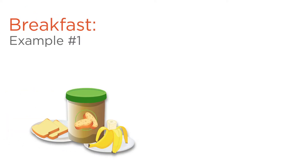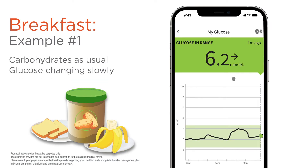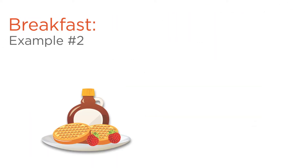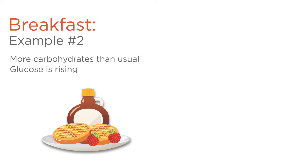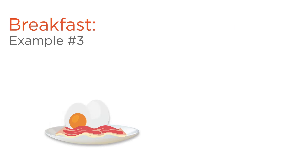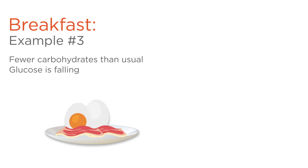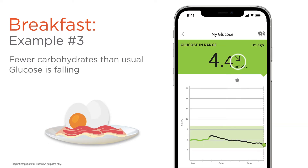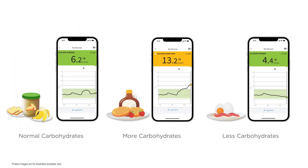Let's say your usual breakfast is two slices of toast with peanut butter and half a banana — here is what your scan could look like after breakfast. Your glucose is 6.2 and remaining steady. Maybe you were craving waffles instead, so you had two waffles with strawberries and syrup, containing more carbohydrate than usual. Later you scan and you see your glucose is rising. Another day you are out of toast so you make yourself bacon and eggs — lots of protein but fewer carbohydrates. Two hours later you scan and your glucose is falling. Can you see how the amount of carbohydrates can change your readings?